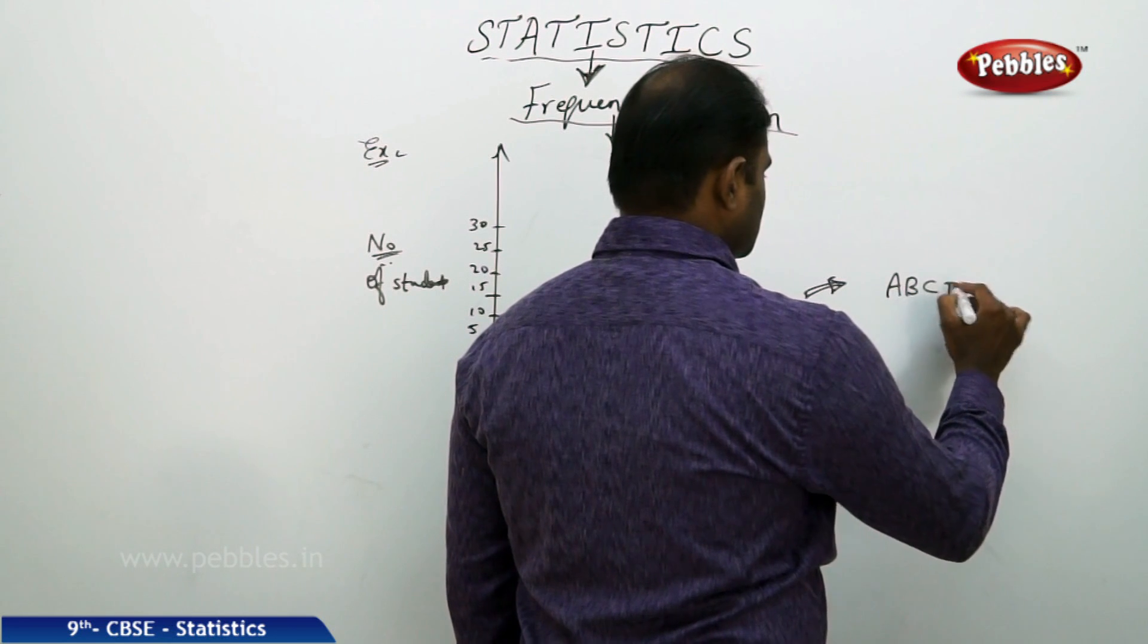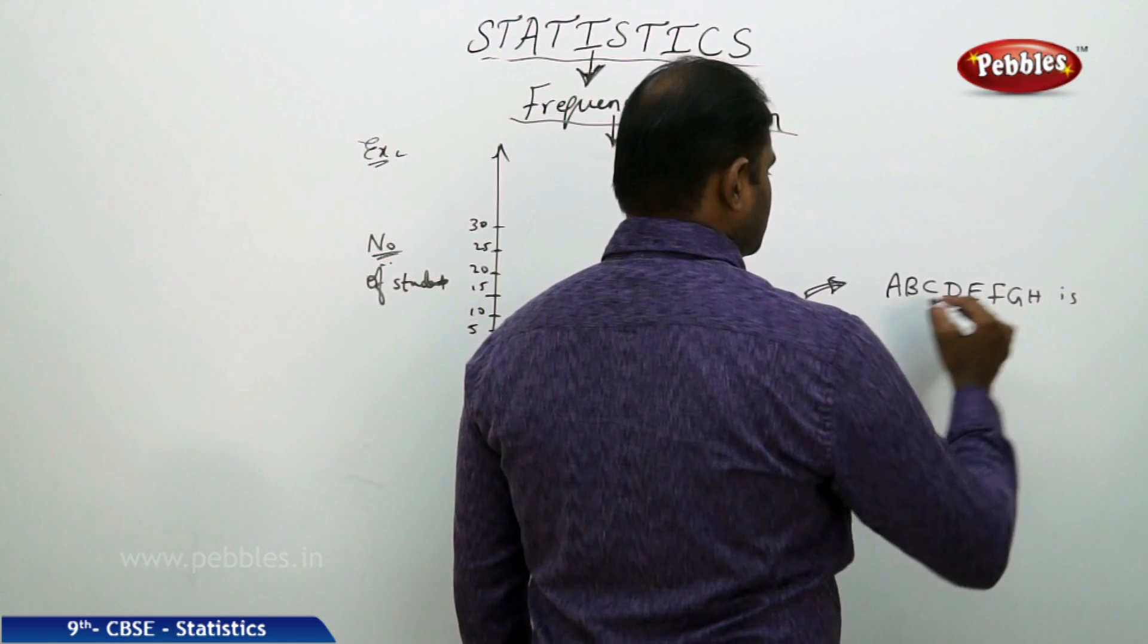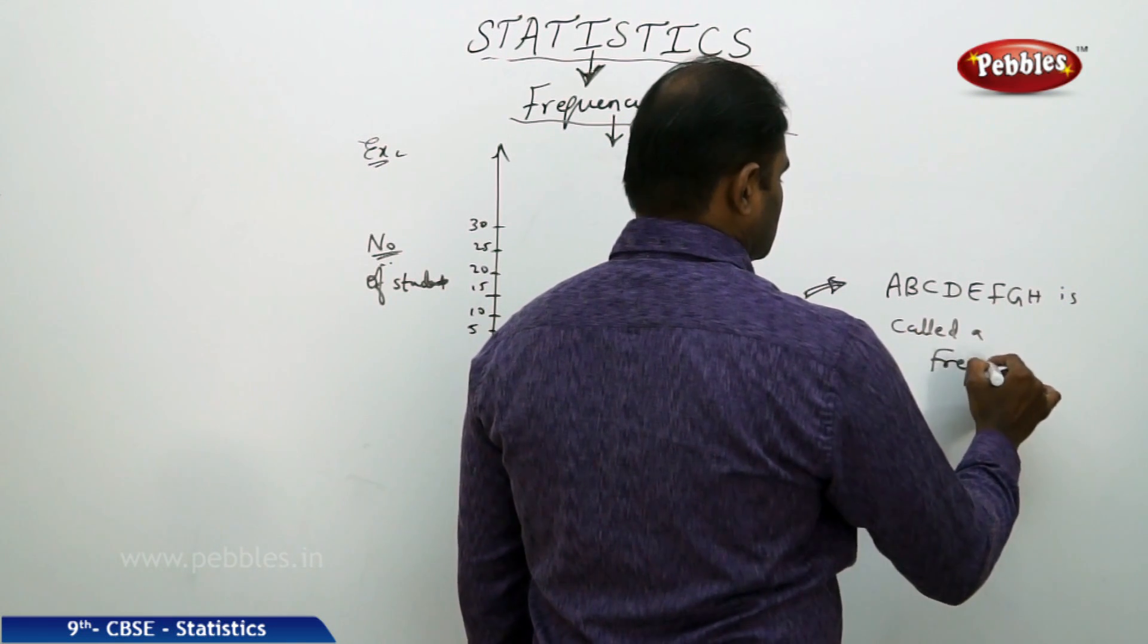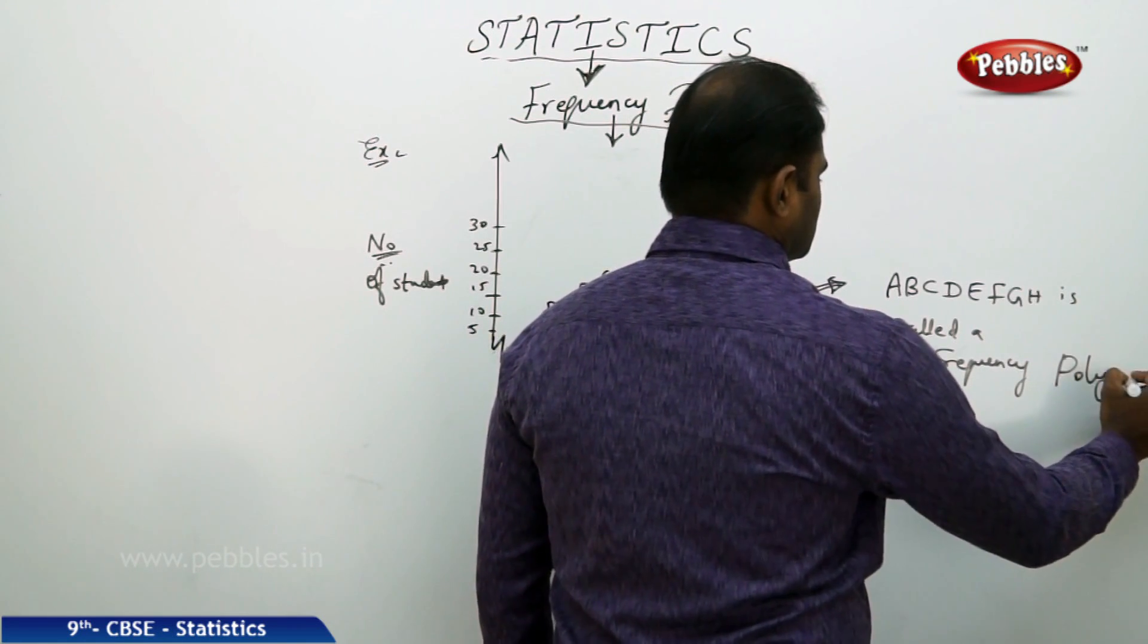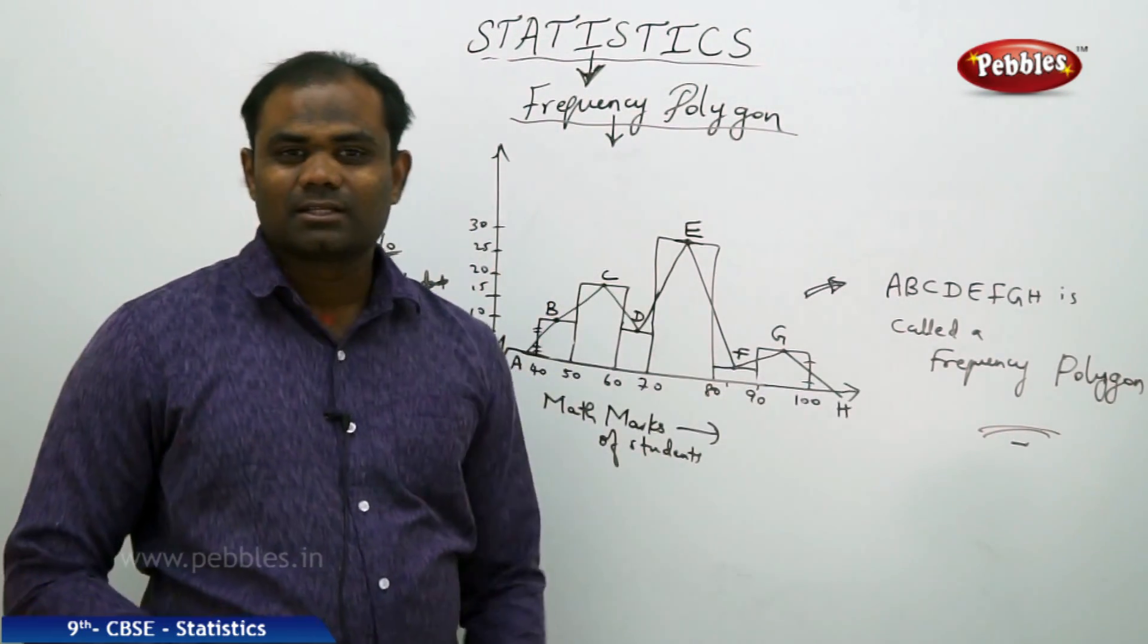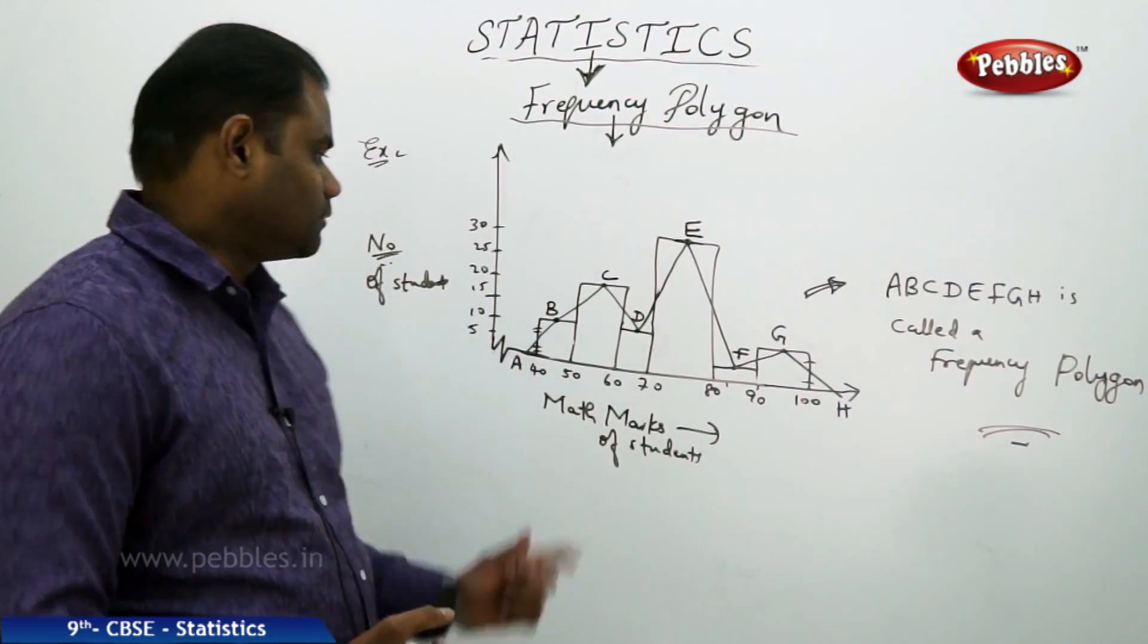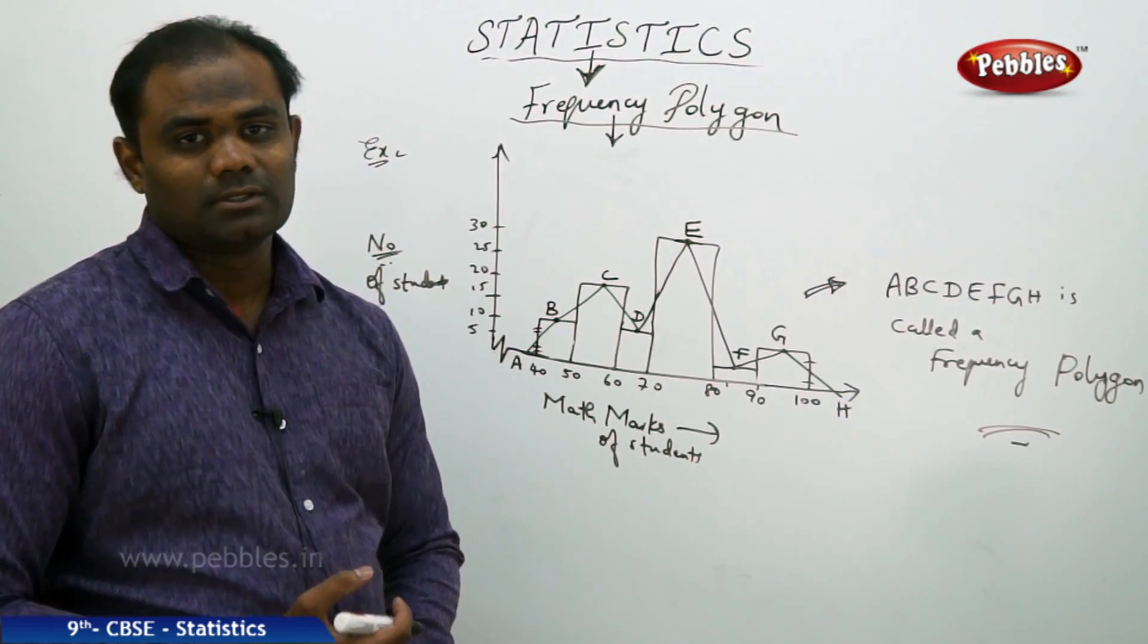A, B, C, D, E, F, G, H is called a frequency polygon, a frequency polygon with n sides closed figure. A histogram with all its midpoints joined gives us a frequency polygon.